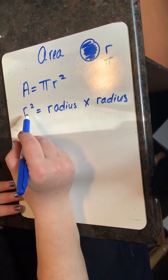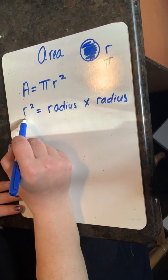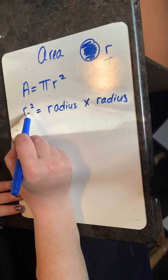r squared is an exponent where the square or the two means take the base and multiply it by itself twice.